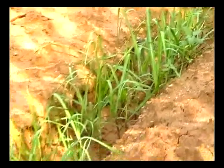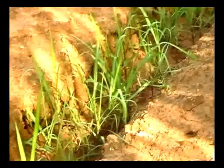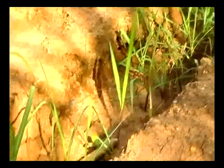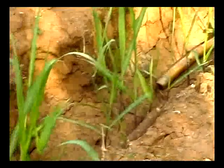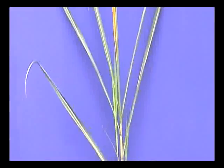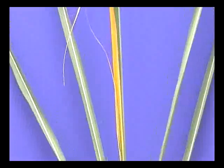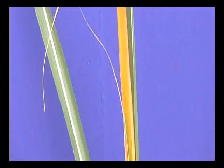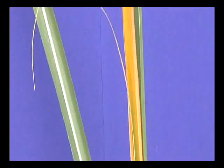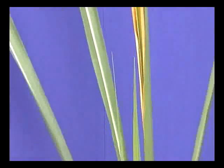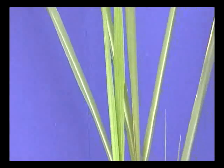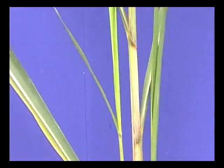Among the borers infesting sugarcane crop, early shoot borer, that is, Chilo infuscatellus, is widely distributed in all the sugarcane growing areas in the country. The pest usually attacks during the early part of cane growth before internode formation. The borer larvae enter the shoot laterally below the ground level by one or more holes in the stalks and kill the growing point. Thus, it cuts off the central leaf spindle, which eventually dries, forming a dead heart.